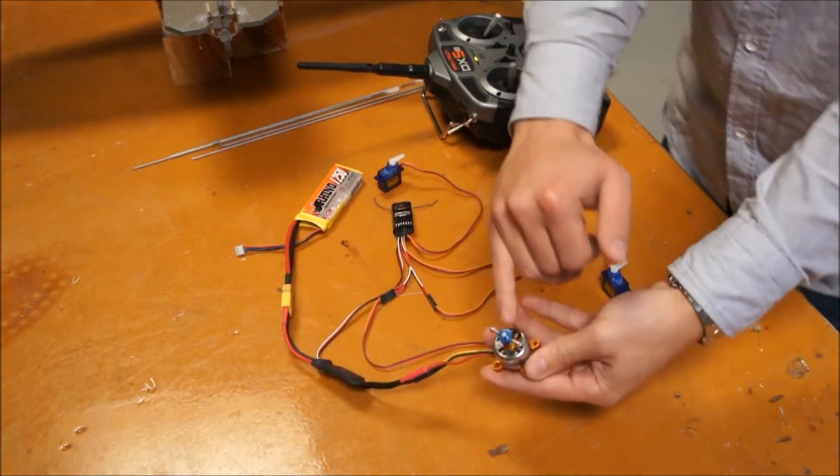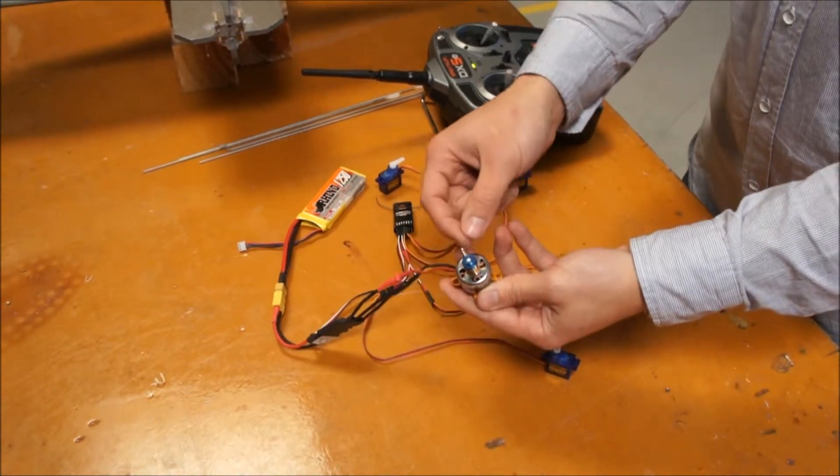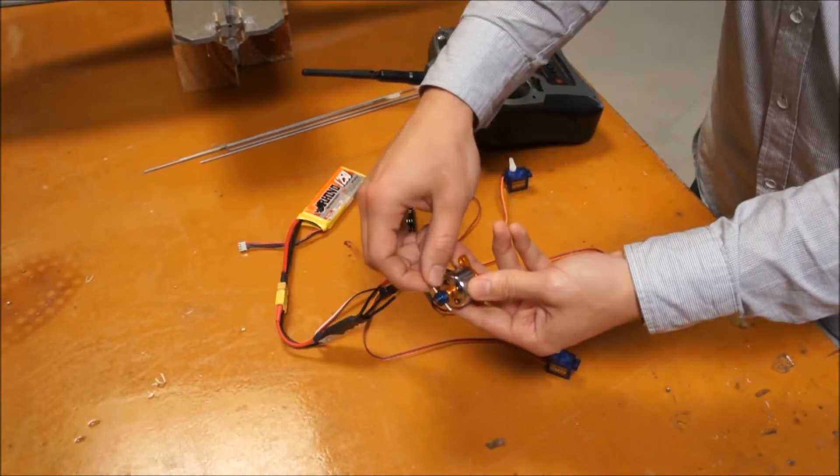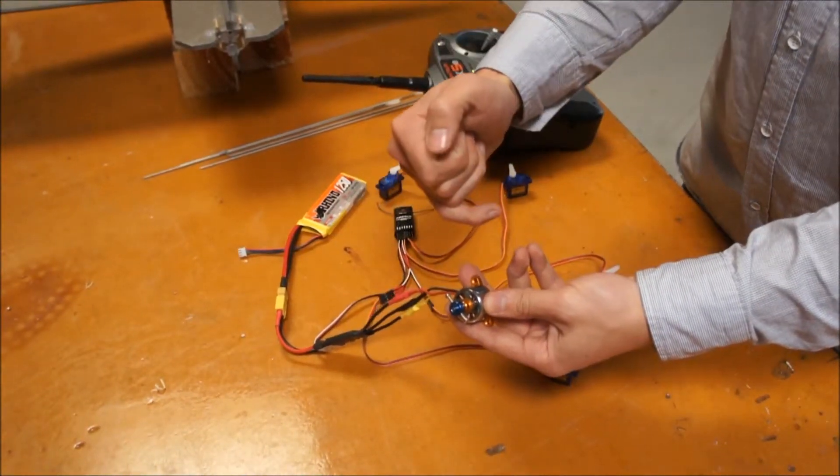Now I've got the little prop saver already on here and that's just got two screws coming through the side that are grabbing onto the threaded rod in the centre.